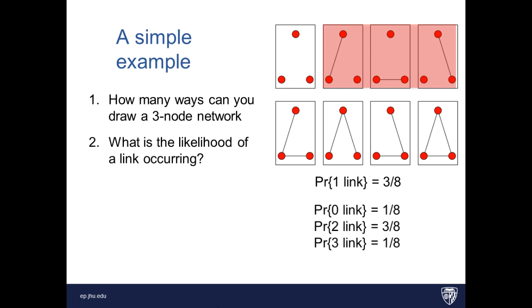Okay. So what's interesting about this is the likelihood of one or two links is much higher than the likelihood of zero or three. And we find that as the networks scale up, there will always be more configurations around the density of 0.5 than around the density of zero or one.